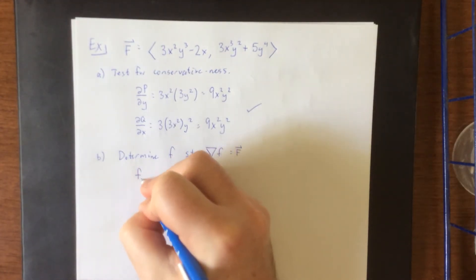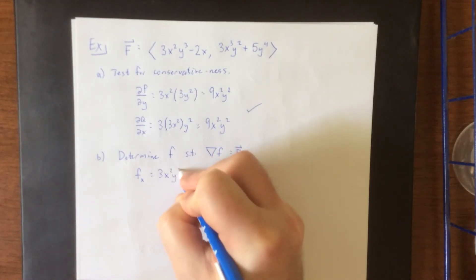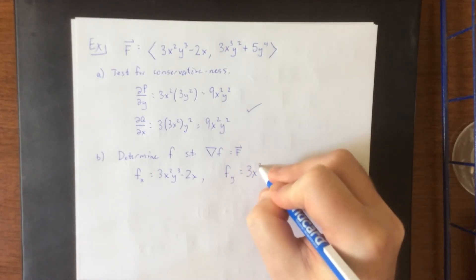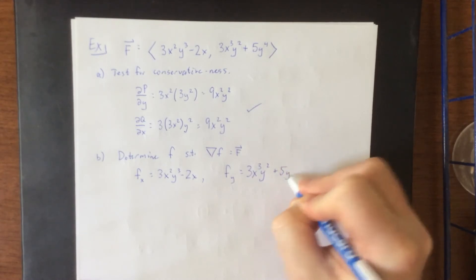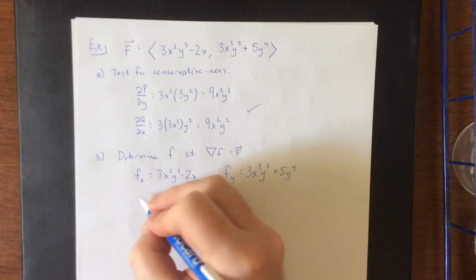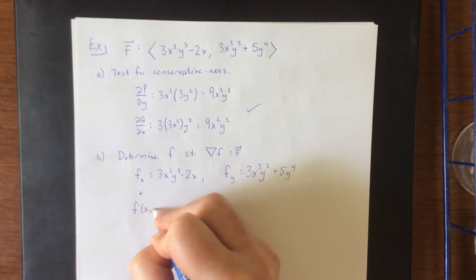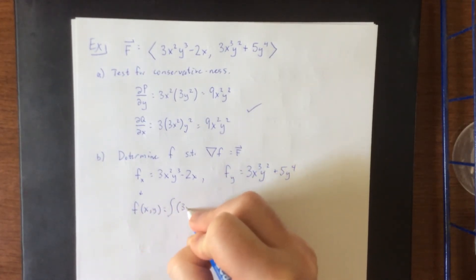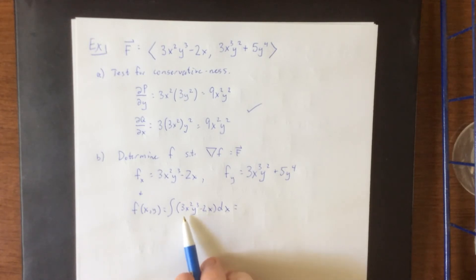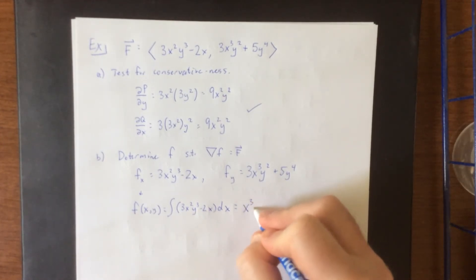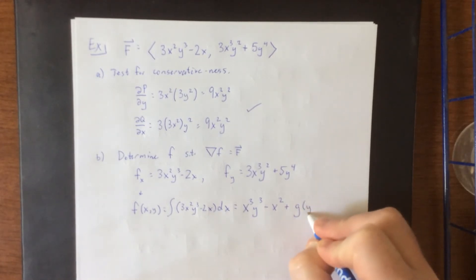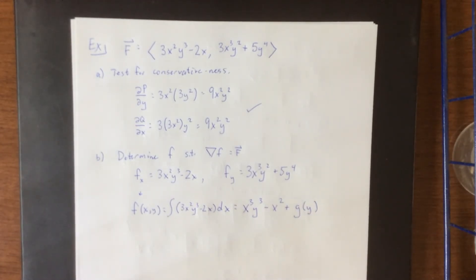So what we know at this point is that the partial derivative of f with respect to x is going to be 3x²y³ − 2x, and we also know that the partial derivative of f with respect to y is 3x³y² + 5y⁴. You're allowed to start with either one arbitrarily. I'm going to pick the first one and integrate with respect to x. This will be the integral of 3x²y³ − 2x with respect to x. The 3x² treating y³ as a constant gives x³y³, and −2x becomes −x². Then we also have plus some function of y.